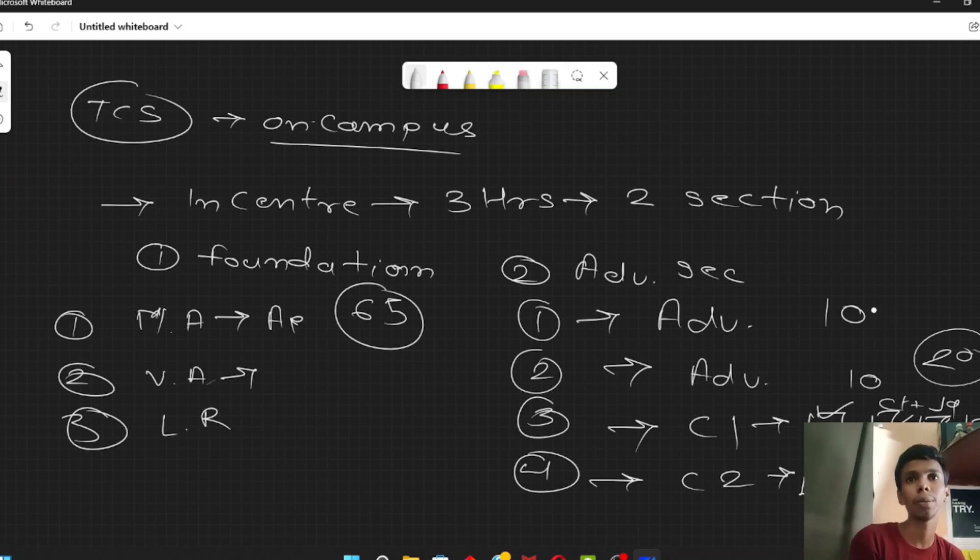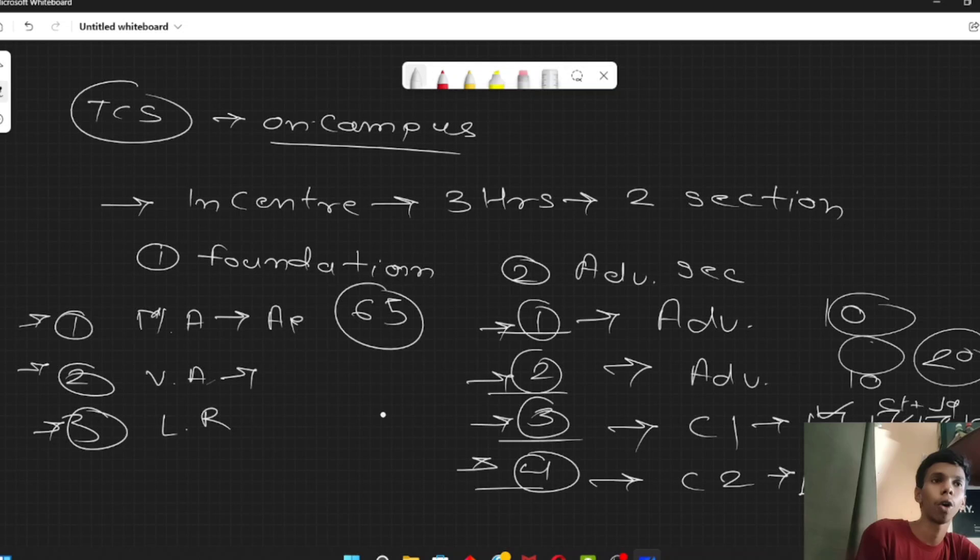So, this is the timing of this section. How did you do the total paper? There were 3 sections in foundation, and in the advanced section, there were 4 sections: advanced quantitative, advanced reasoning, coding question 1 and coding question 2.